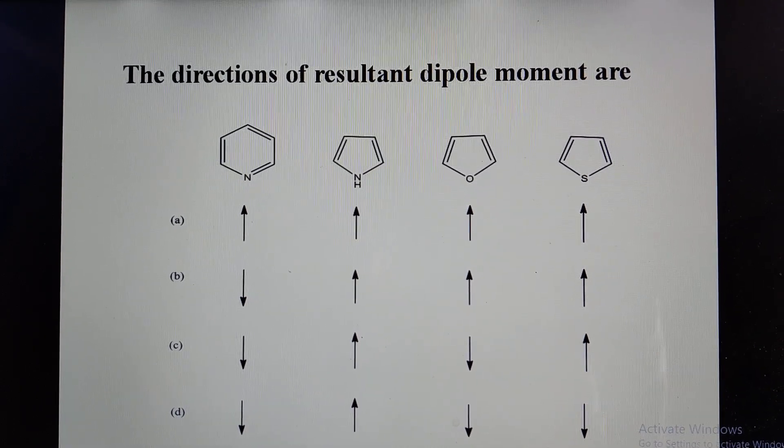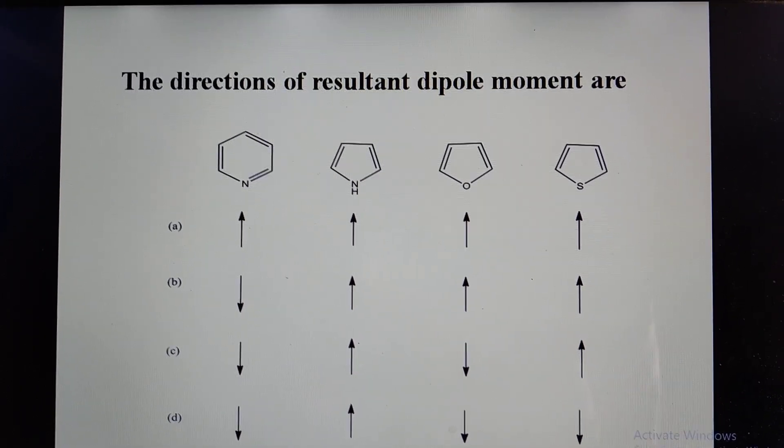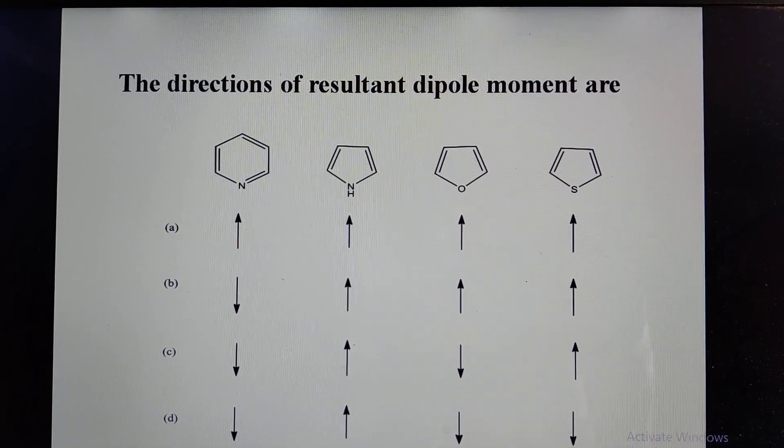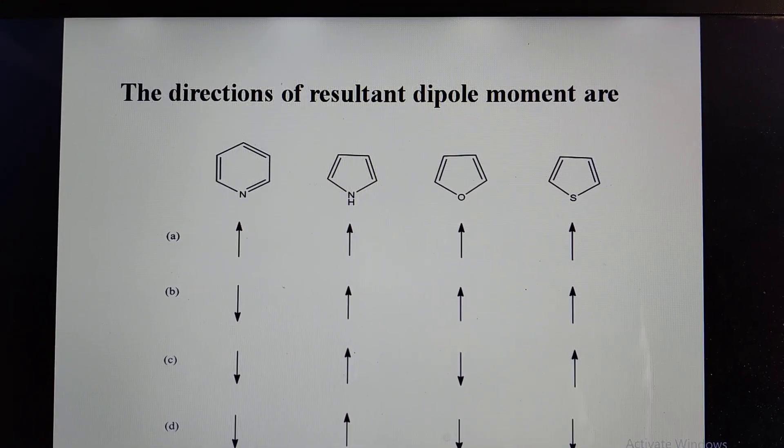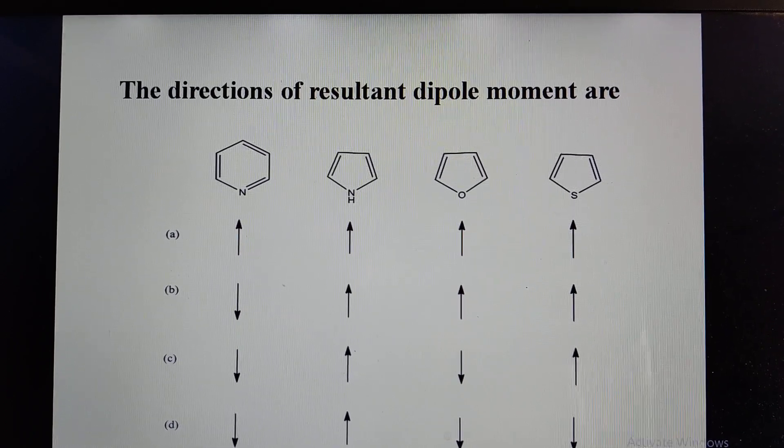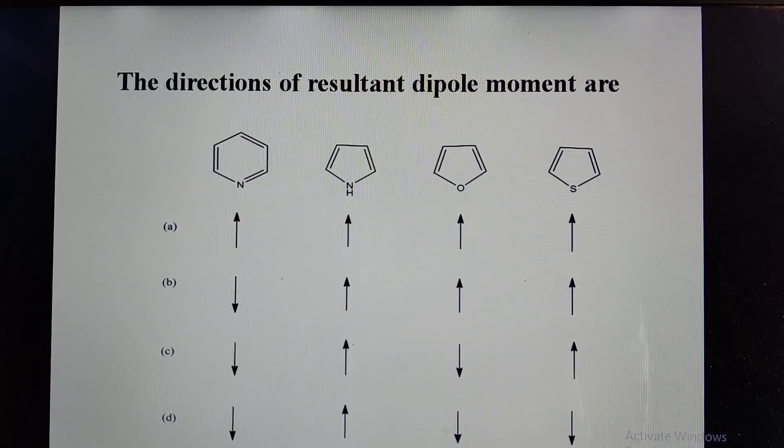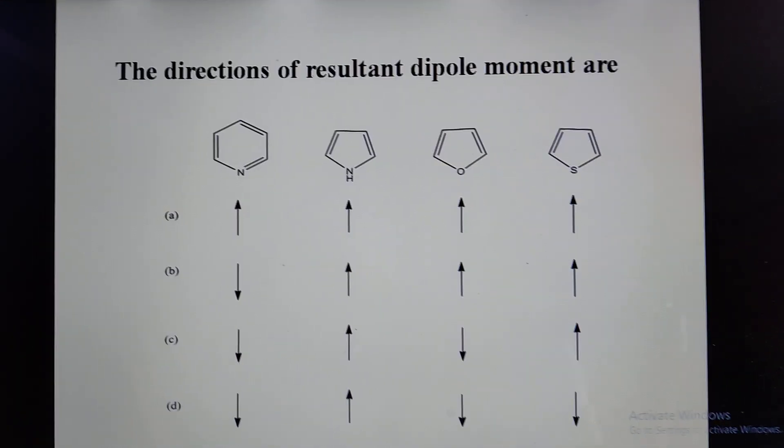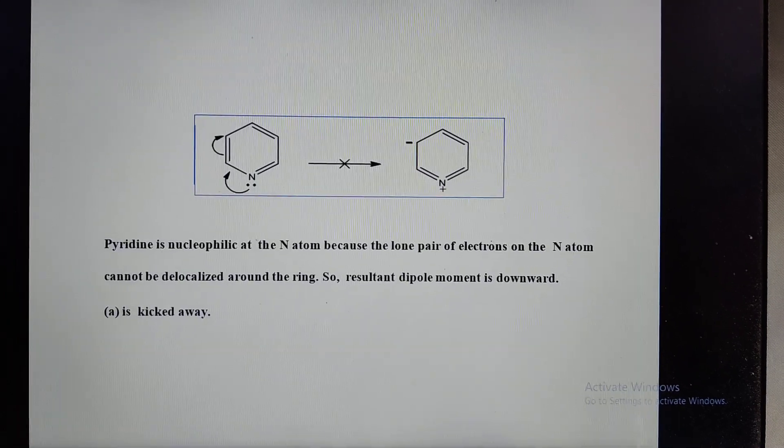Hello, welcome to Unlocking Chemistry. This is today's question: we have to identify the directions of resultant dipole moment for the following compounds - pyridine, pyrrole, furan, and thiophene.